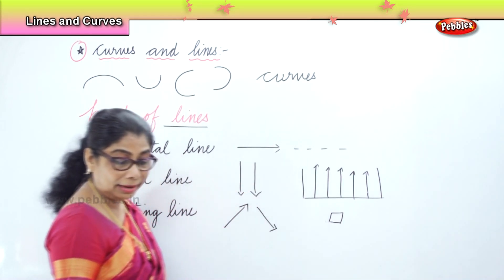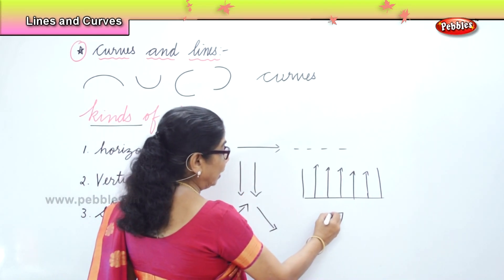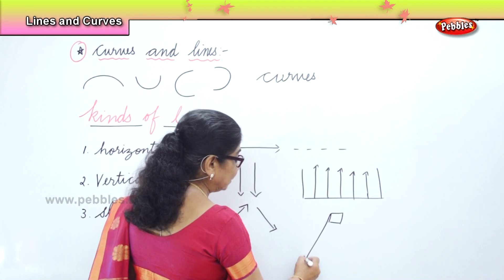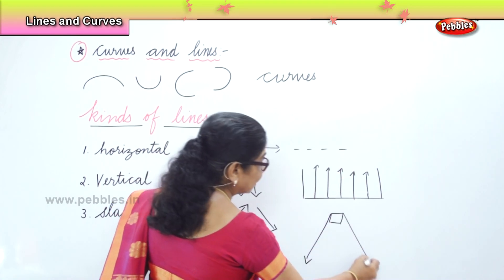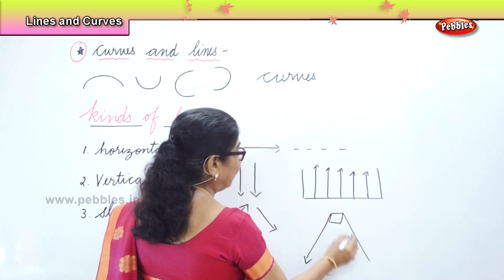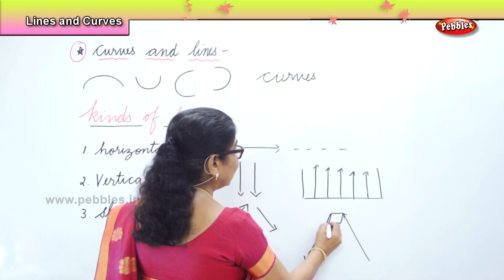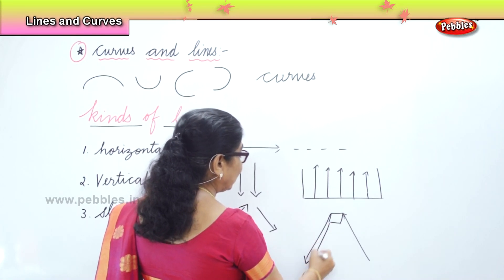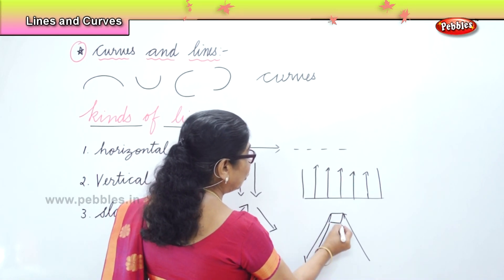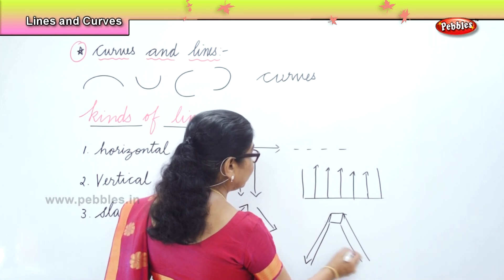In the ladder, you will find lines going like this — lines coming down, going up like this. This is what I call coming down and going up.